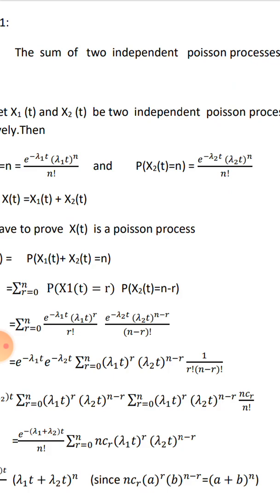Using the convolution formula, that is sigma r equals 0 to n: first probability P(X1(t) = r) times second probability P(X2(t) = n minus r). This gives P(X2(t) = r) times P(X2(t) = n minus r).